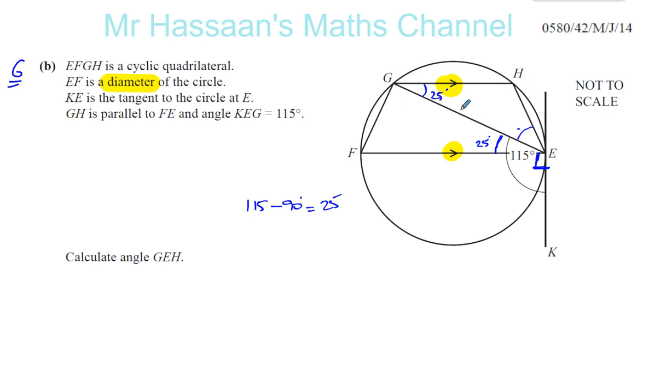Well, FE is the diameter. Any angle standing on the diameter, you see the angle FGE is subtended by the diameter, it must be a right angle. So there we have a right angle. So that's going to help us as well. We've got it actually.